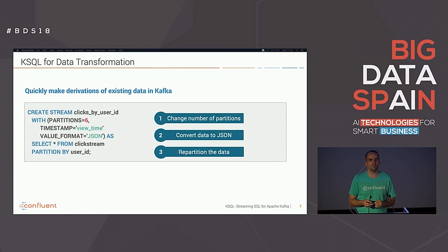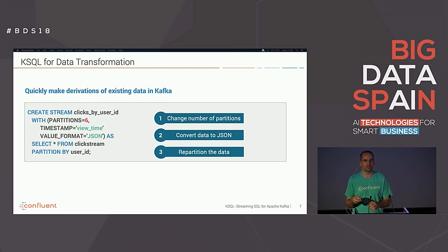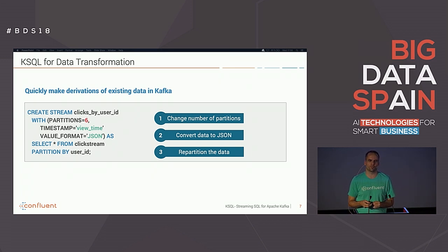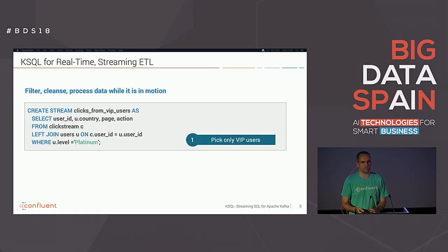You can do much more than just debugging and analysis — that's just the first step. Another example is transformation. You often have to do things for your existing Kafka cluster like changing the number of partitions, converting your data format — say from JSON to Avro — or repartitioning the data. In the past you did this with command line tools or Java code. Here you just write SQL queries for that, using them on your existing topics and Kafka infrastructure.